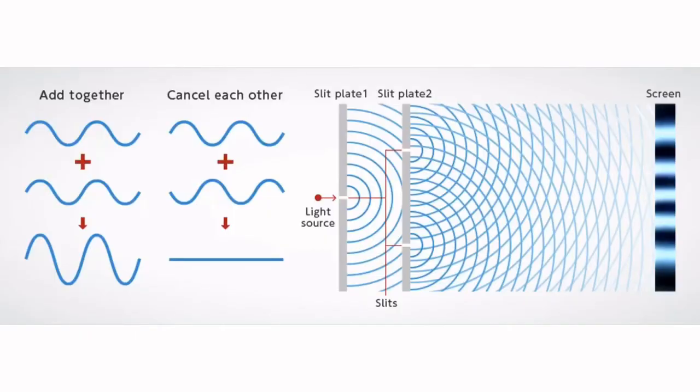Sharir Afshar created an experiment based on Thomas Young's double-slit experiment in 2001. In Young's experiment, it is shown that you cannot observe both wave and particle properties of an object simultaneously.